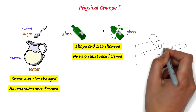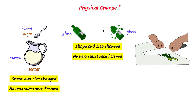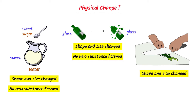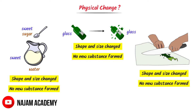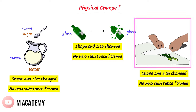Thirdly, consider some vegetables. Let you cut these vegetables into several pieces. You change the shape and size of the vegetables but you do not form something new. The small pieces of the vegetables still retain their property — the small pieces of potato are still potato. So it is a physical change.